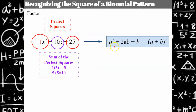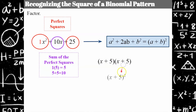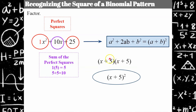So if I look at this pattern, I know that (x + 5)(x + 5), or (x + 5)², is this factored. And we can verify that foiling the inner and outer terms gives 5x and 5x, which sum to 10x.